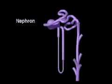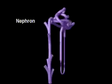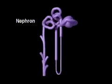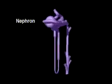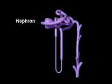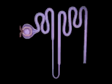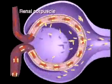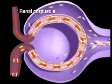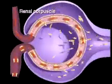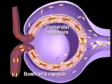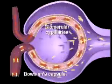The nephron is the kidney's functional unit. In its first section, the renal corpuscle, filtration occurs as fluid and small molecules in blood are filtered from glomerular capillaries.